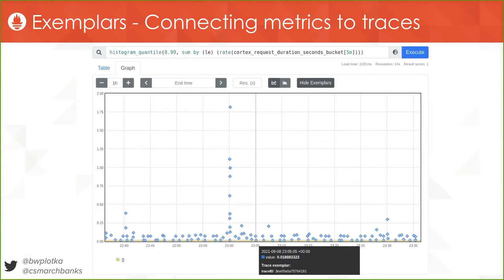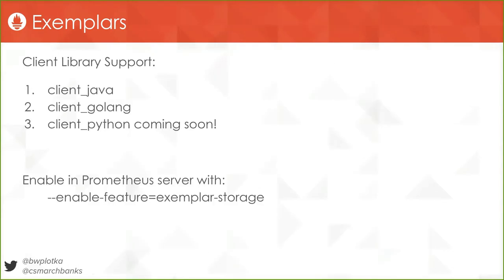For example, here's how exemplars are represented in the Prometheus user interface. Graphing the 99th percentile of request latency for Cortex, you can click on any of the exemplars present in the graph to find a trace ID to look up in your favorite tracing tool. If you filter the series to only look at certain pods or error status codes, you will also only get exemplars relevant to those series — always matching the context you're looking at. Having the ability to quickly jump from an alert or dashboard to an example trace is very powerful and streamlines both incident and debugging workflows. Client library support for exemplars is still growing — both Java and Go fully support exemplars, and Python has an open pull request for basic support. To enable collecting exemplar data in Prometheus and sending it via remote write, use the exemplar storage feature flag. Note that exemplars are only collected when using the OpenMetrics exposition format.